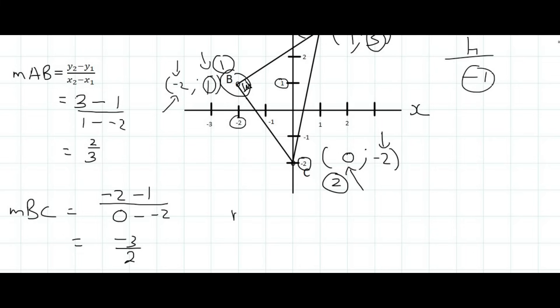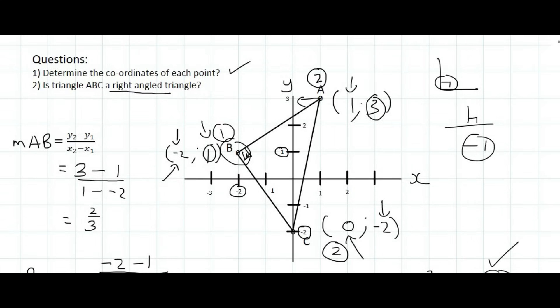So now what I'm going to do is I'm going to multiply the gradient of AB with the gradient of BC. And so that's going to be 2 over 3 times by minus 3 over 2. And what you would see if you do that on the calculator is that you're going to end up with minus 1. And so those two lines are perpendicular, which means that that angle is 90 degrees.